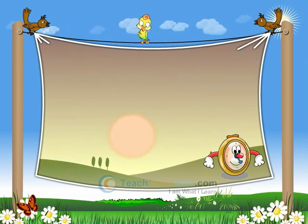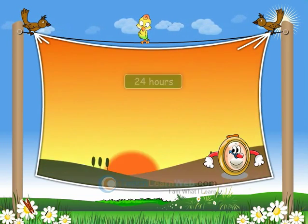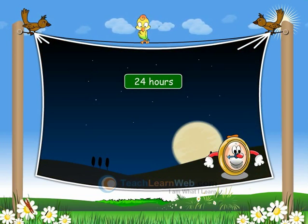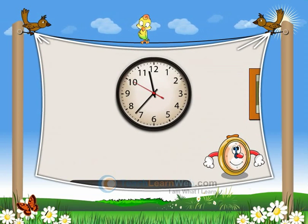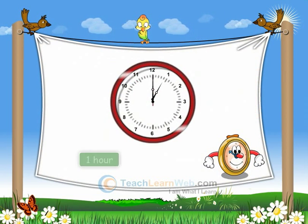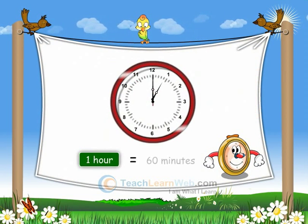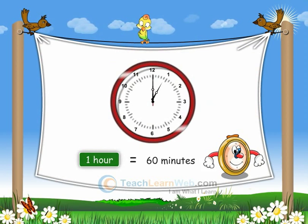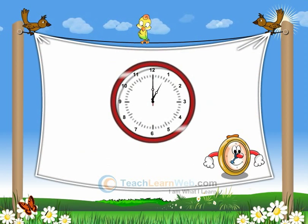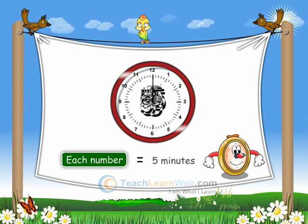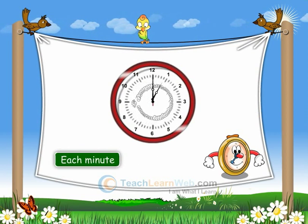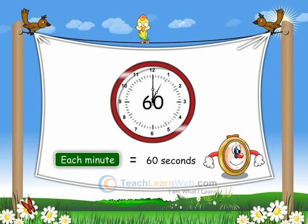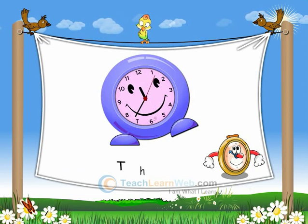A day has 24 hours — we can see one complete arc in the clock. One hour has 60 minutes, given by the first 12 numbers on the clock face. Each number equals 5 minutes. Each minute has 60 seconds.